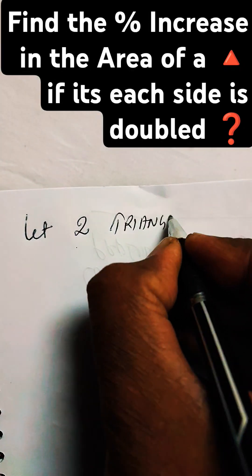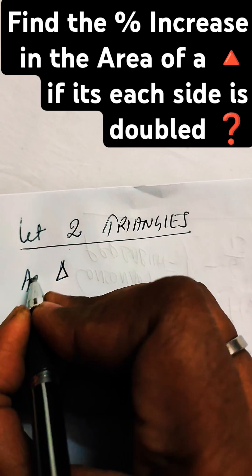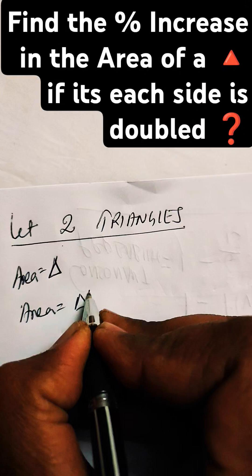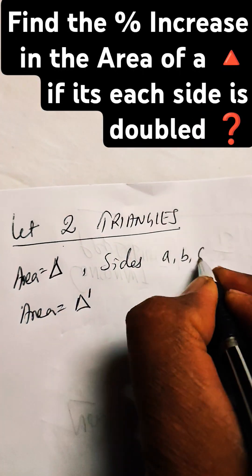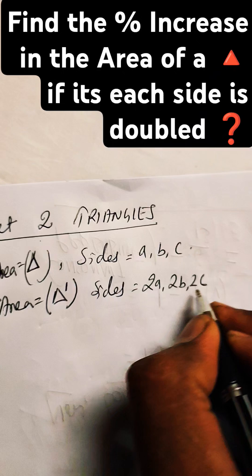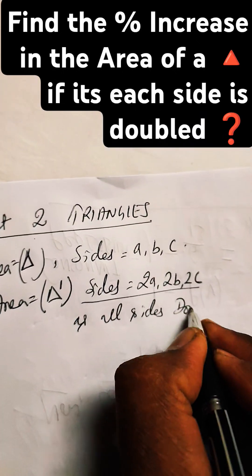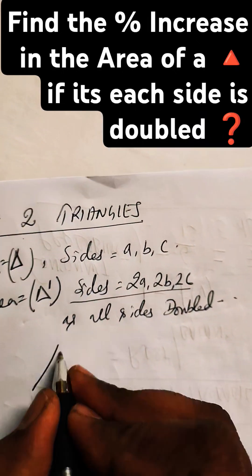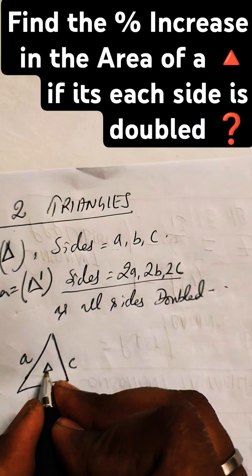To find the percentage increase in the area of a triangle when the initial triangle has sides A, B, C and the second triangle has sides 2A, 2B, and 2C - that is, when the sides of the triangle are doubled - we need to calculate what the percentage increase in the area will be.